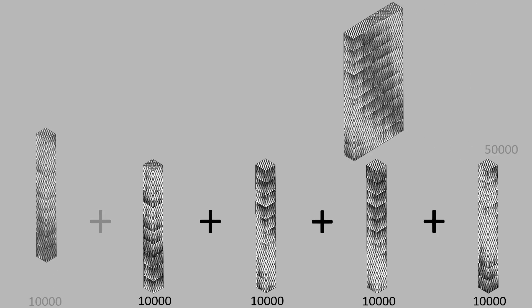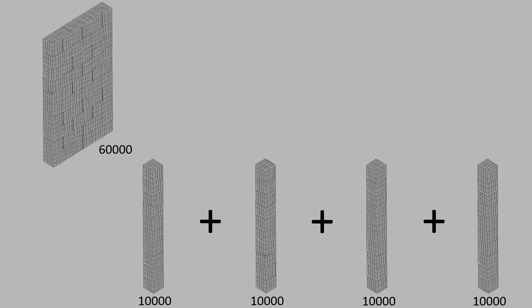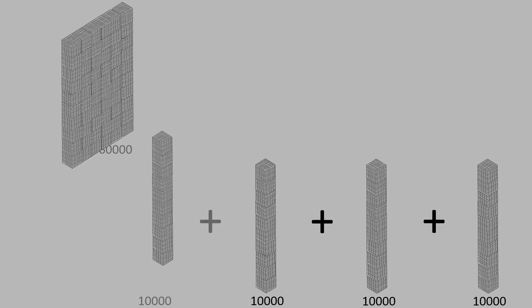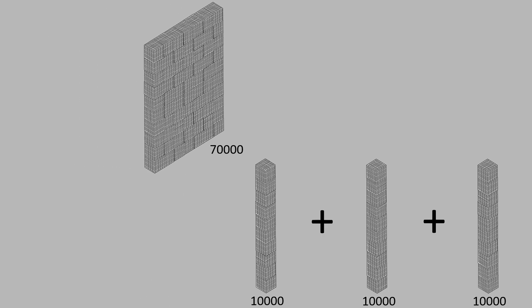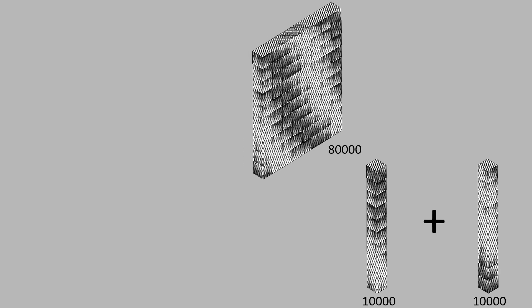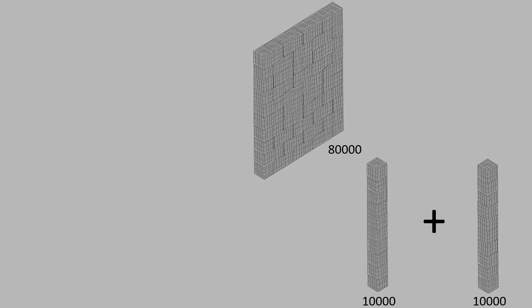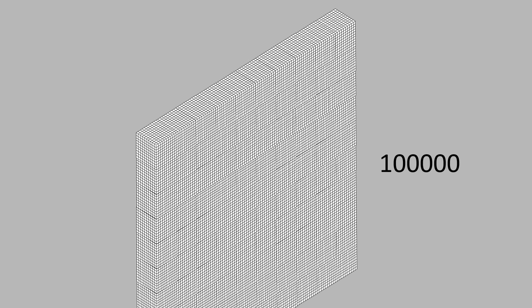50,000 plus 10,000 is equal to 60,000. 60,000 plus 10,000 is equal to 70,000. 70,000 plus 10,000 is equal to 80,000. 80,000 plus 10,000 is equal to 90,000. 90,000 plus 10,000 is equal to 100,000.